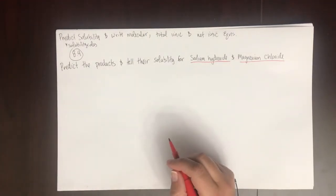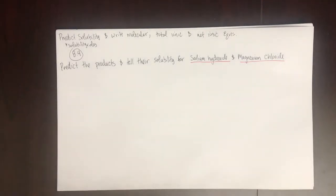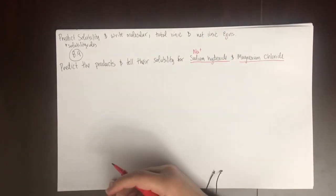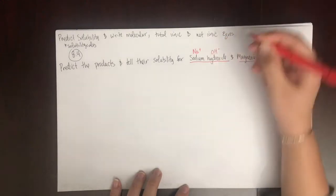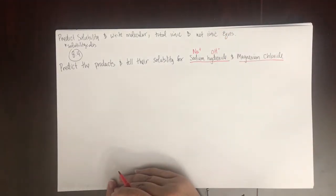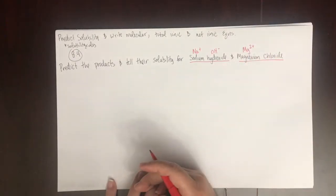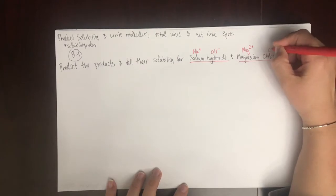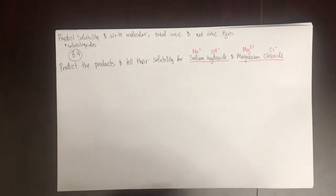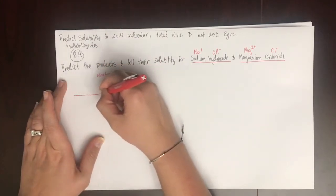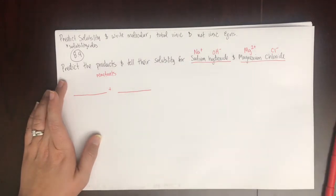You also need to be able to write compounds from names. Sodium is in group one, so it's plus one. Hydroxide is one of the polyatomic ions you're responsible for knowing. Magnesium is in group two, so it's Mg²⁺. Chlorine — the chloride ion — is in group seven, near the noble gases, so it's Cl⁻. We'll use these ions to write the ionic compounds.